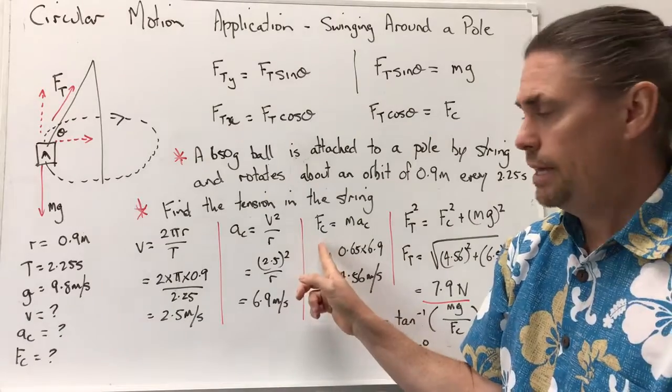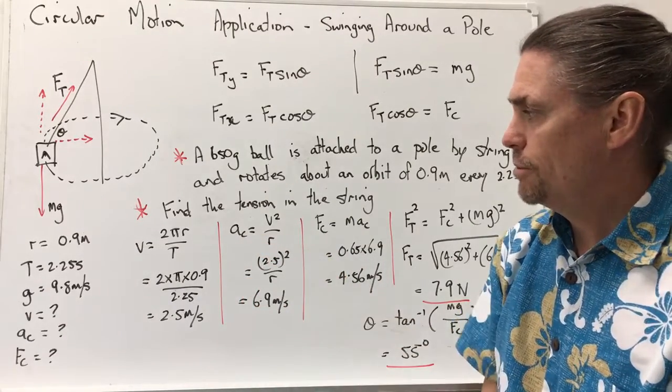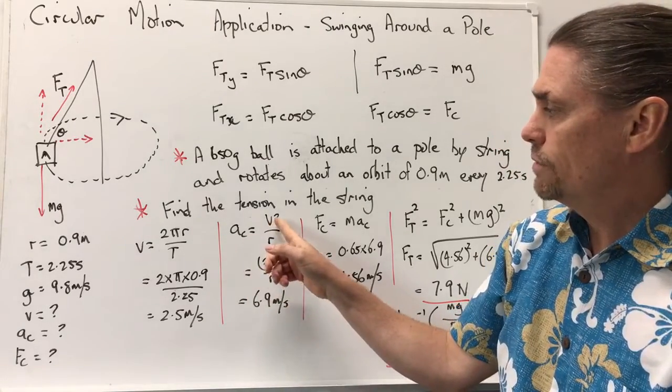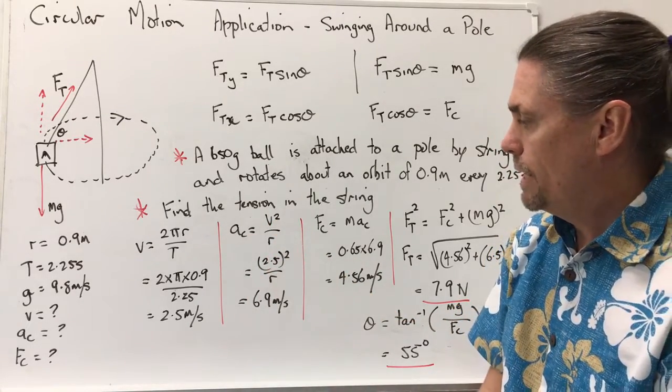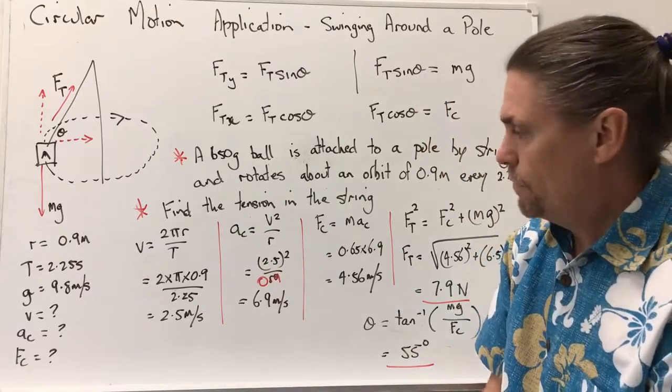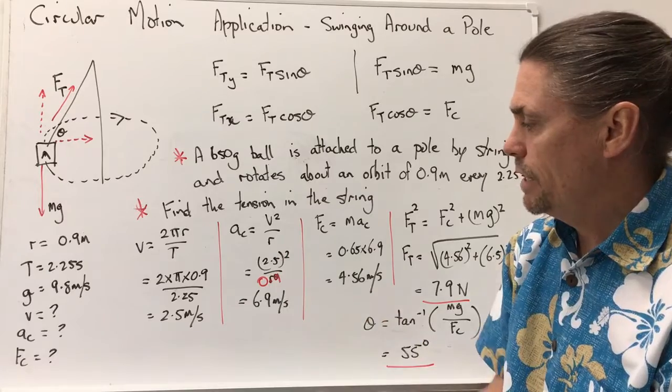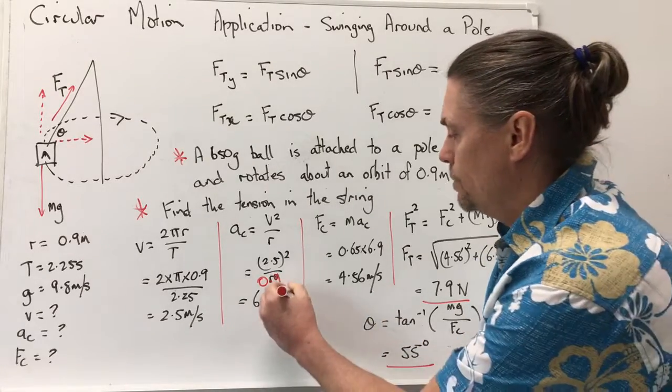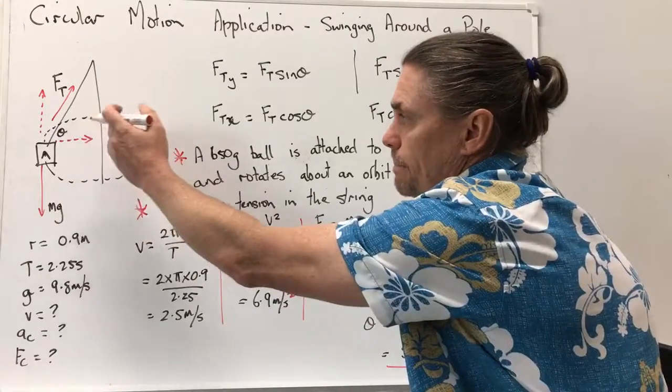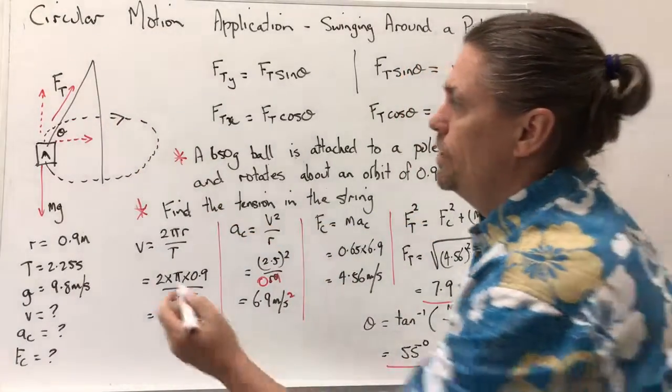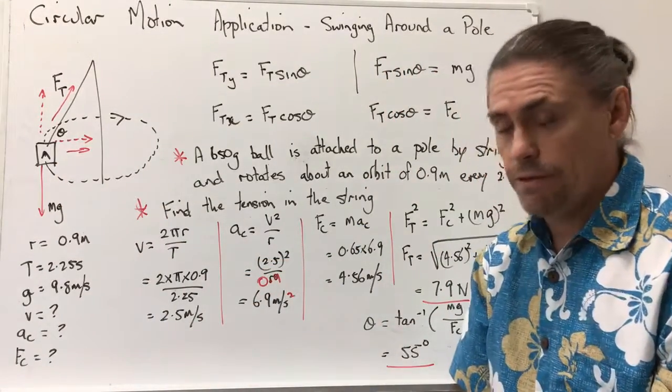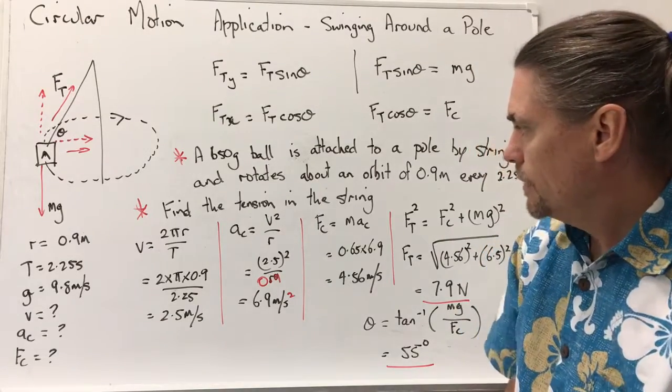Next thing we need to do, and we could go straight to this step, but for demonstration purposes let's find the centripetal acceleration. So centripetal acceleration is equal to v² over r. Putting our numbers in, and our r here is 0.9, we've got 2.5² over 0.9, which gives us 6.9 metres per second squared. Now, because this is traveling in a circular orbit, we know that this centripetal acceleration will occur toward the centre of that orbit.